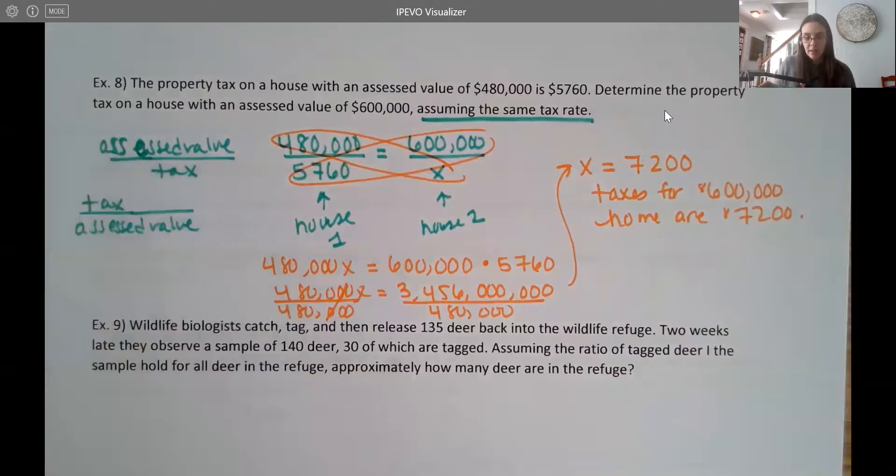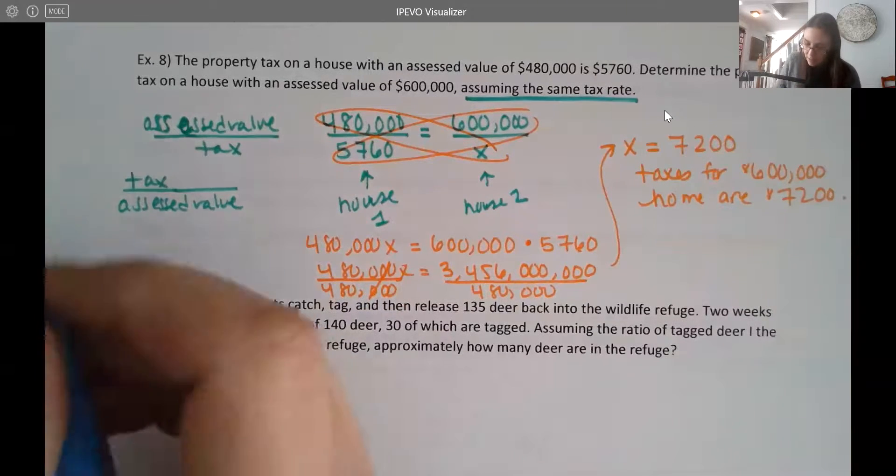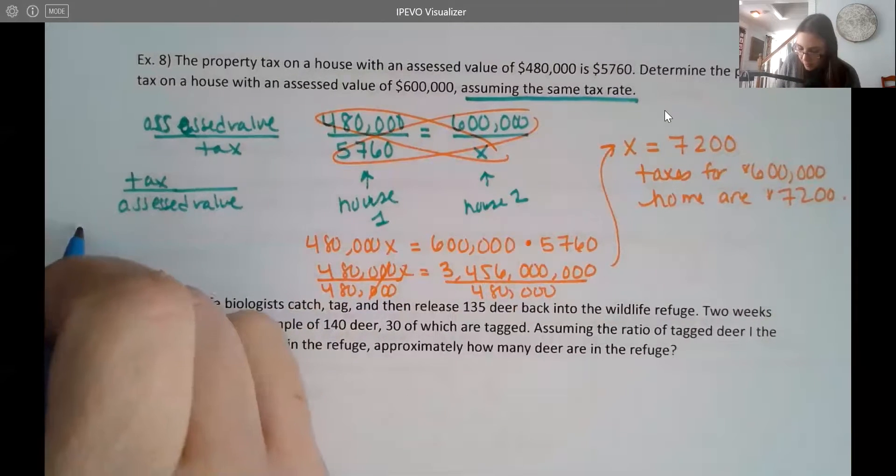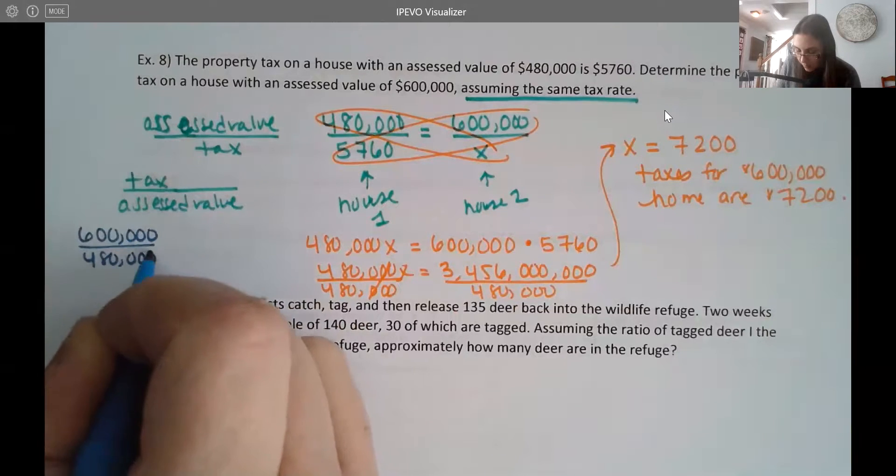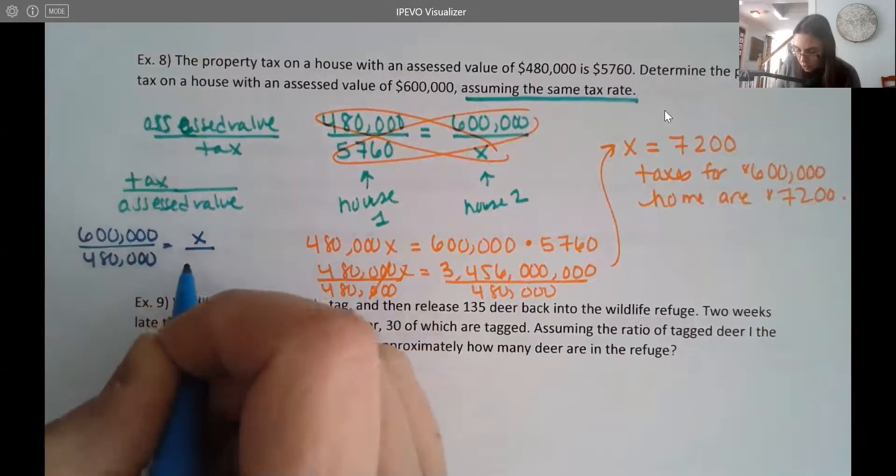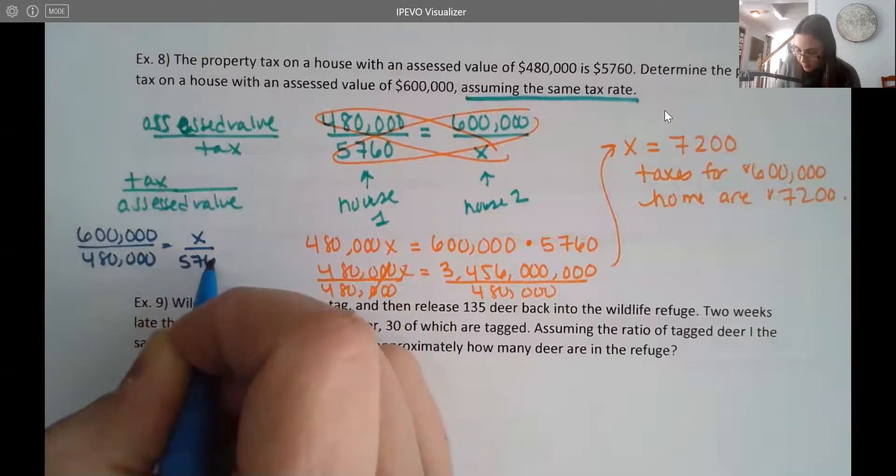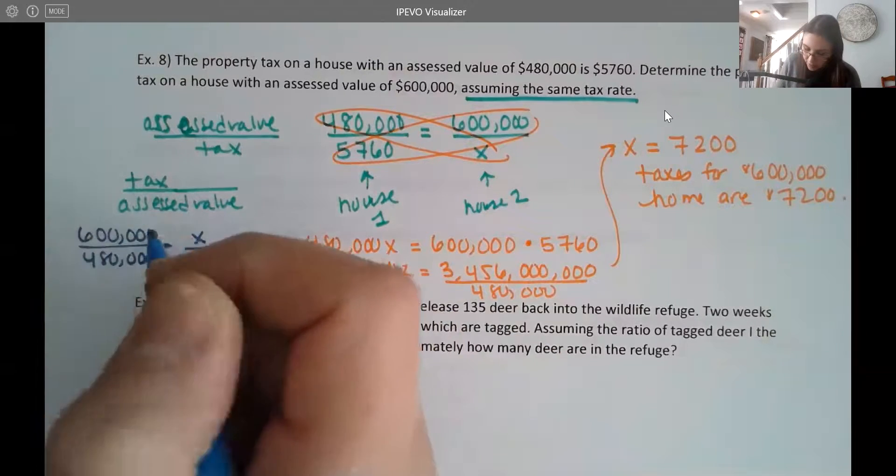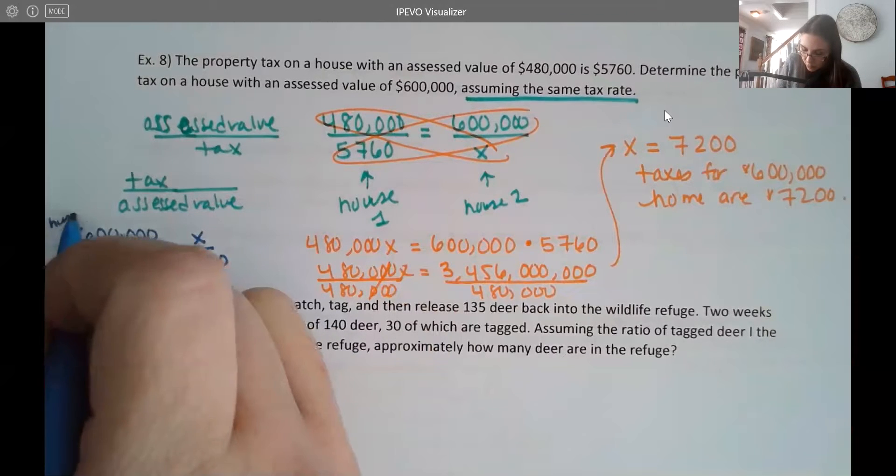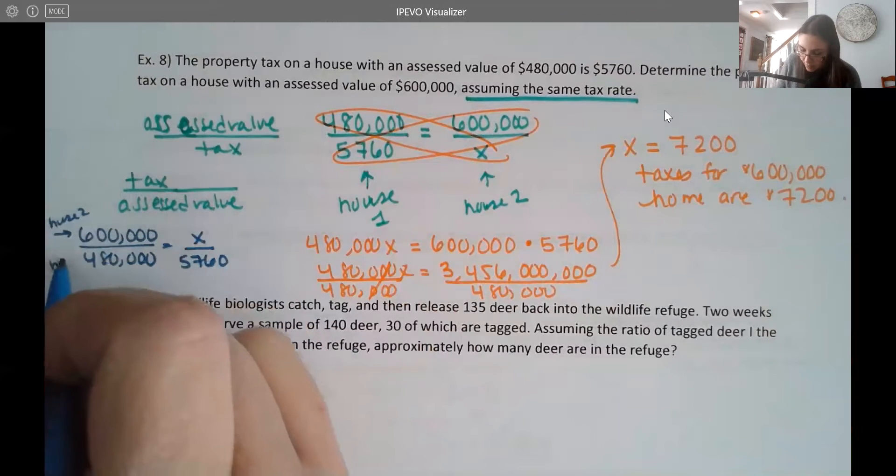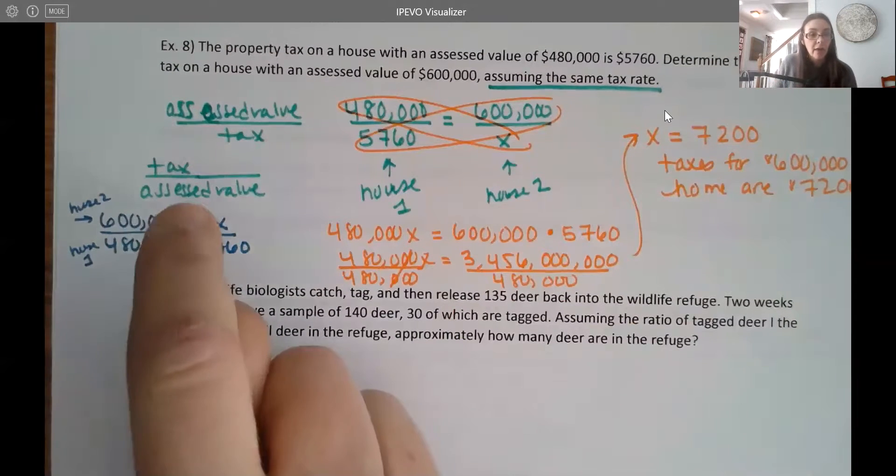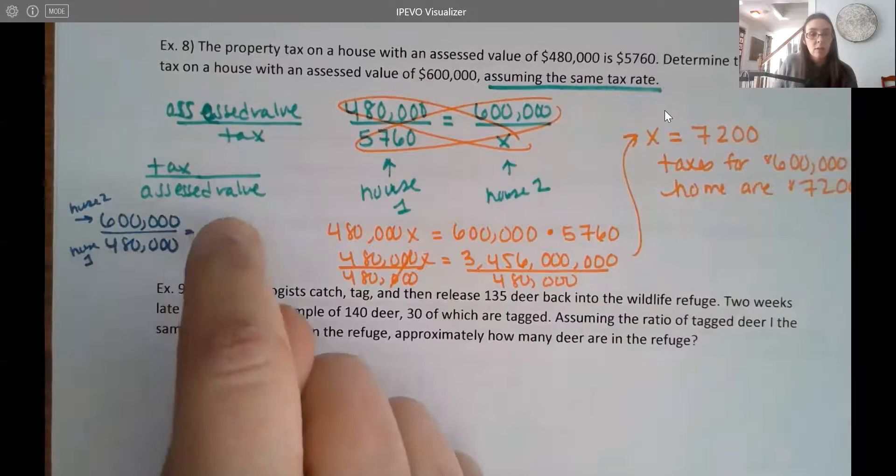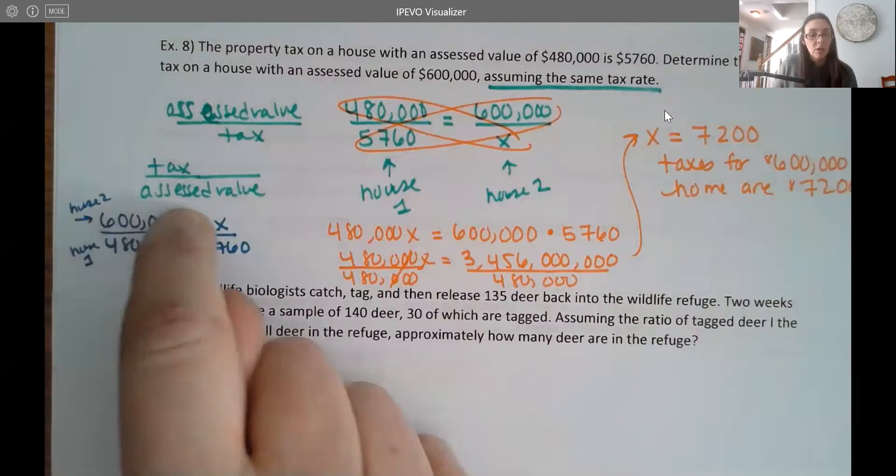There's even another way to do it. Although I like this way the best, this is kind of how I like to set things up, but you could even do it like this: you could compare the value to the value, and then the tax to the tax. So here you're looking at the value. So this is house two in the top, and this is house one in the bottom row.